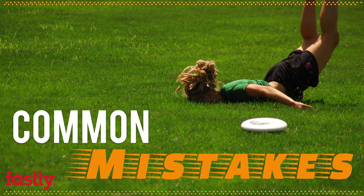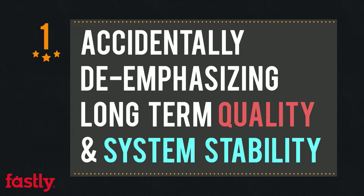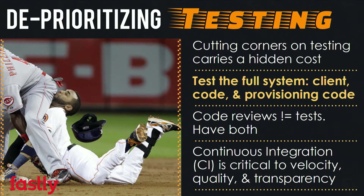What are the things that we tend to sacrifice first whenever we're trying to rush? I think the mistakes that we tend to make happen whenever we accidentally de-emphasize long-term quality and system stability. We do this with several micro and not-so-micro decisions. We accidentally do this, for example, whenever we de-prioritize testing.